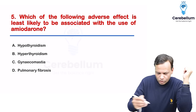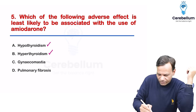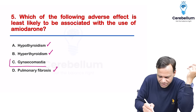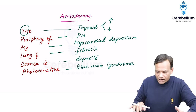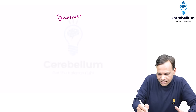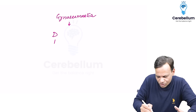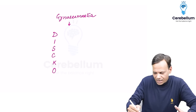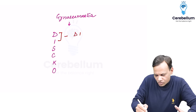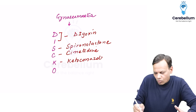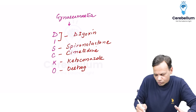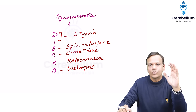From the options, hypo/hyperthyroidism and pulmonary fibrosis can occur with amiodarone. Gynecomastia is not caused by amiodarone — that is the answer. Drugs causing gynecomastia are remembered as DISCO: D for digoxin, I, S for spironolactone, C for cimetidine, O for estrogens/female hormones, and K for ketoconazole. Amiodarone does not cause gynecomastia.